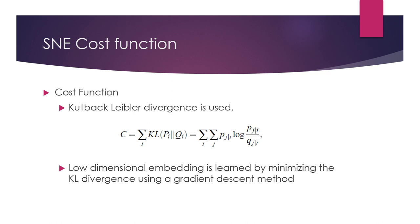In order to identify these optimal locations, it is going to calculate the errors between the conditional probabilities of the high dimensional space and the low dimensional space, and measure these errors based on a cost function. This cost function is called the Kullback-Leibler divergence, or KL divergence. The KL divergence measures the mismatch between these two probability distributions. In order to identify the optimal locations, it minimizes this cost function based on the gradient descent algorithm. It is helpful to have a good knowledge of gradient descent, as it will help you understand SNE very well.